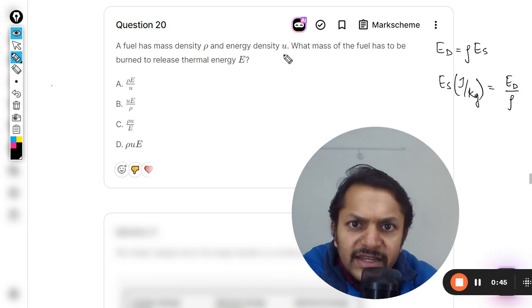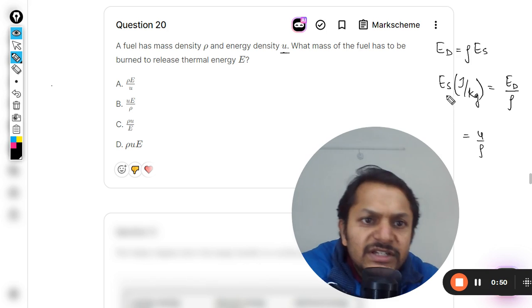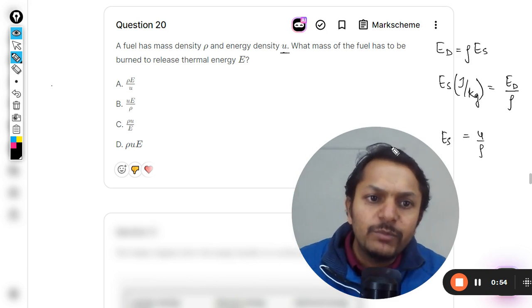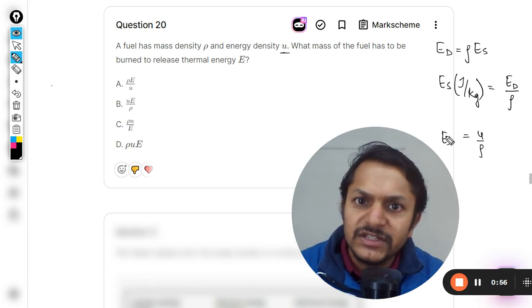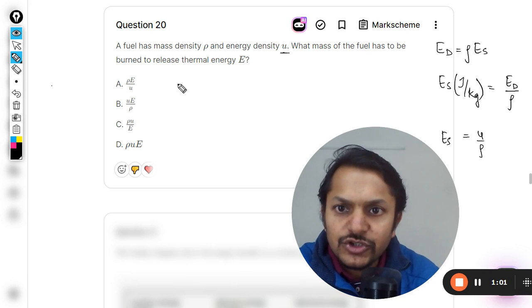So if you burn one kilogram of the fuel, this much is the energy that is produced. Now you want to produce an energy of E. How much kg will be used? So we can just say that the mass of fuel will be the total energy divided by the specific energy, because this will give you the mass of the fuel that is actually required.